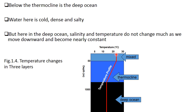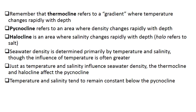In the top layer, temperature almost remains constant from 0 to 50m. From 50m to around 800m is the thermocline layer, where temperature varies from 25 degrees Celsius to 15 degrees Celsius. In the top layer, temperature changes rapidly with depth. Remember that the thermocline refers to a gradient where temperature changes rapidly with depth.